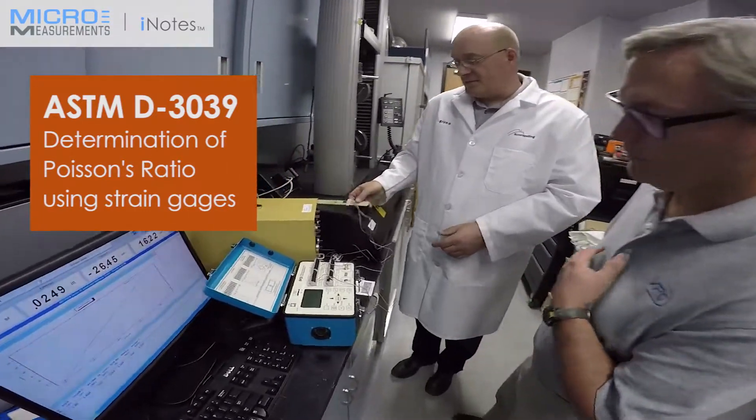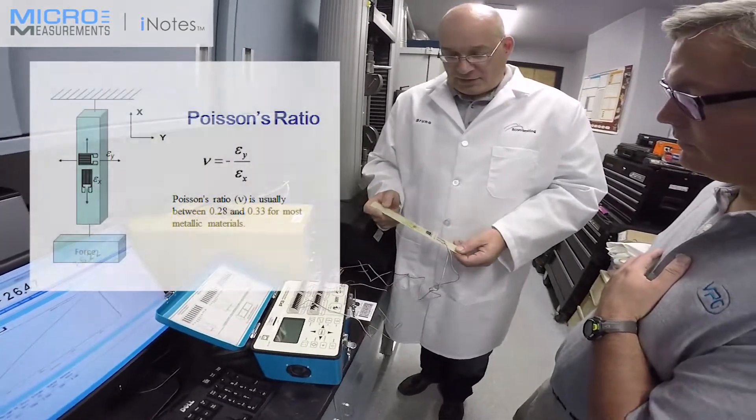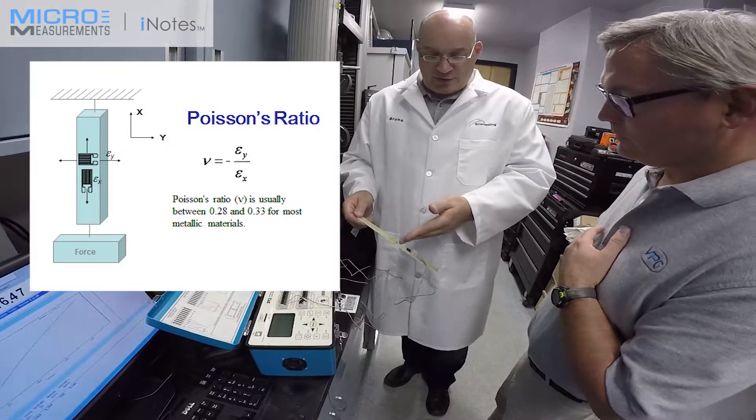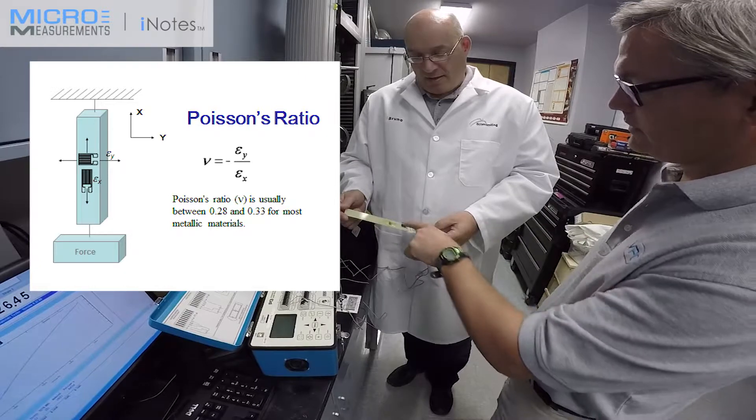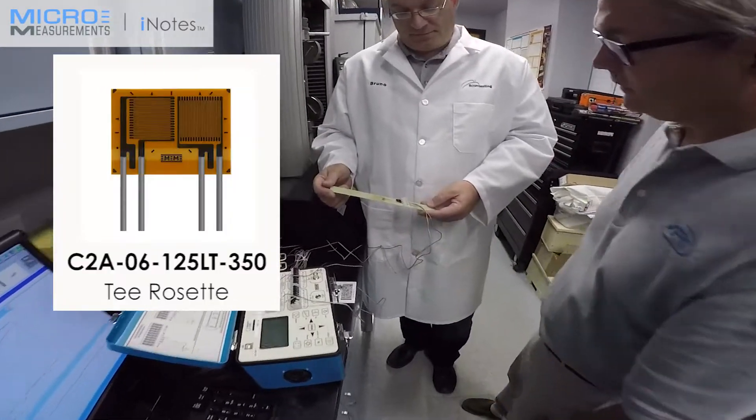Okay. Basically, in this case, what we're trying to do is determine Poisson's ratio, as we all know, is the transverse strain over the axial strain. And it looks like you've got a two element T-Rosette to do that?